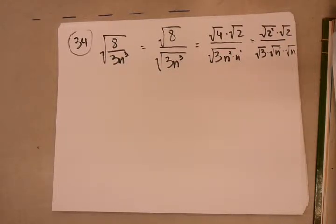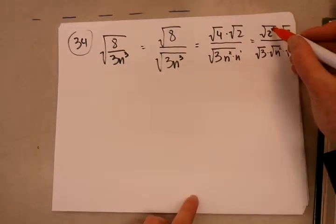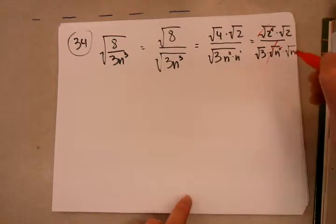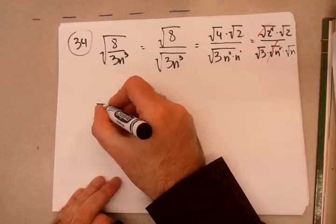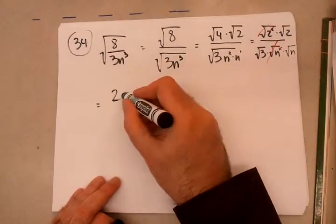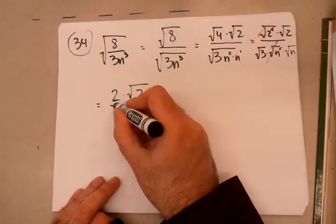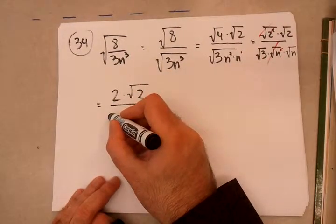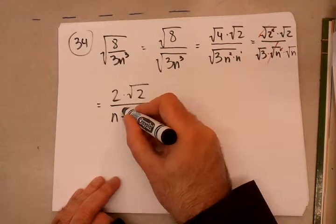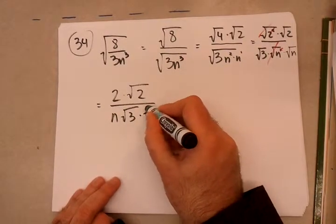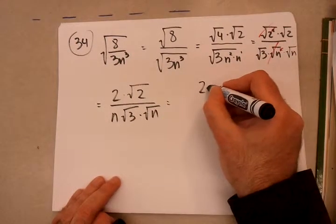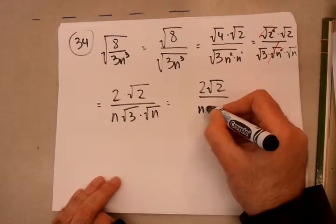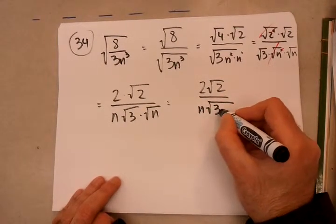Alright. Next, let's do some cancellations right off the bat. Power of 2 and a square root. These go, same thing here. Let's see what I'm left with. I'm left with a 2. I'm left with a root 2. I'm left with an n, then a root 3, then another root n. So, if I were to rewrite this, I'm left with 2 root 2 in the numerator and n with root 3n in the denominator.